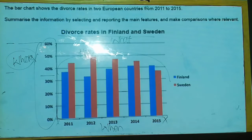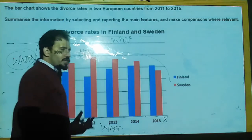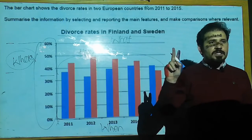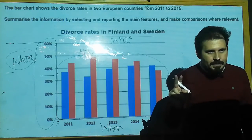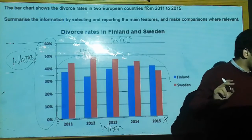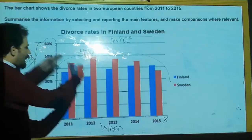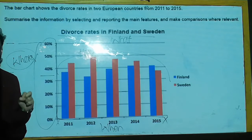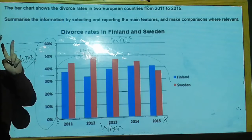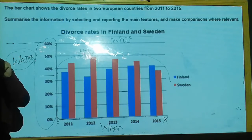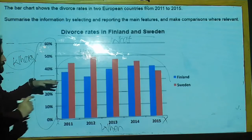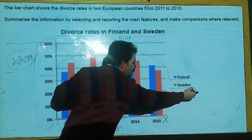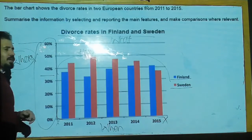If you want to write down supporting overview paragraphs, we can write down two supporting overview paragraphs. There are two ways you can explain this graph. One supporting overview paragraph you can write with the help of Finland, and then the second supporting overview paragraph you can write on Sweden.